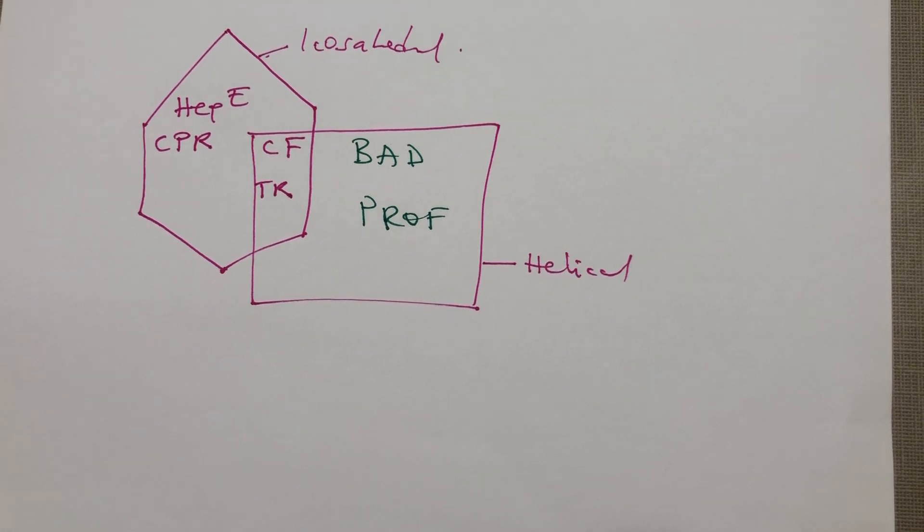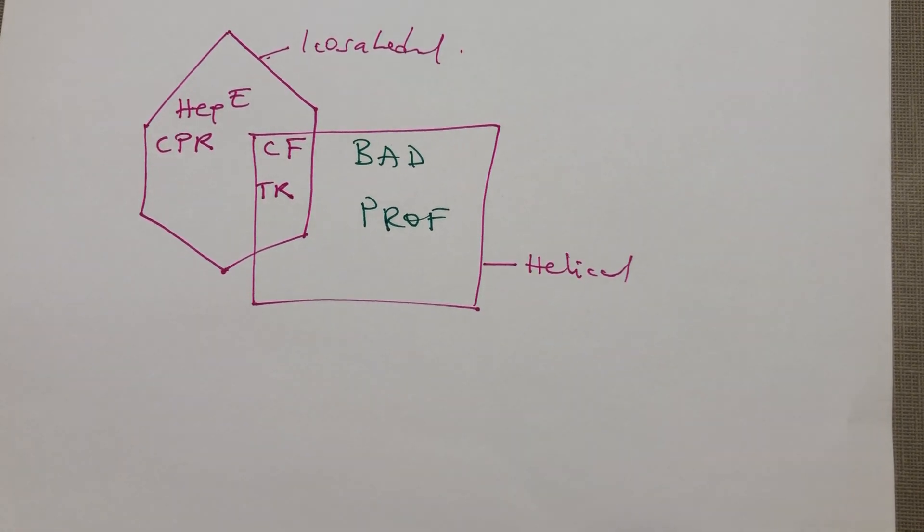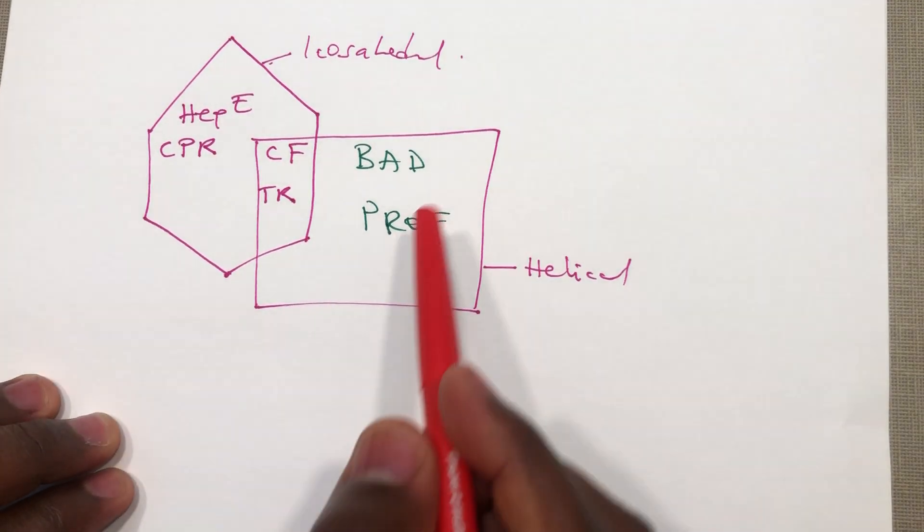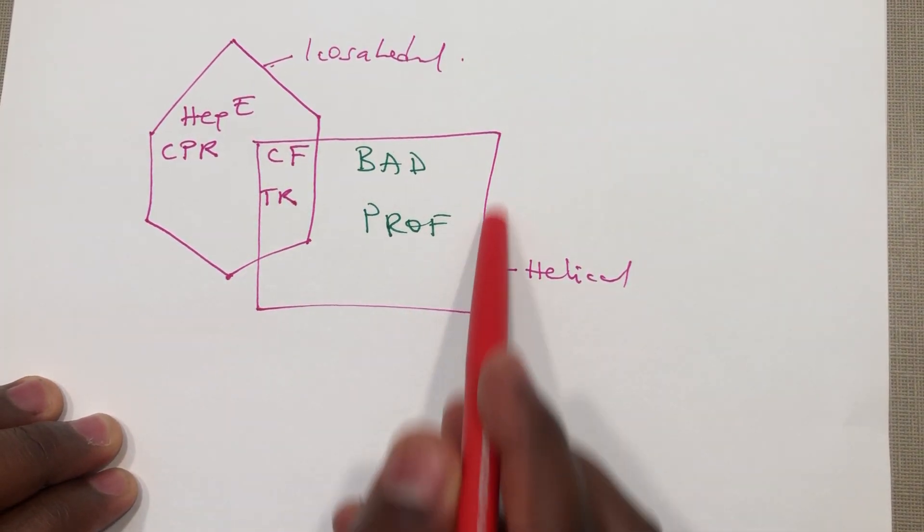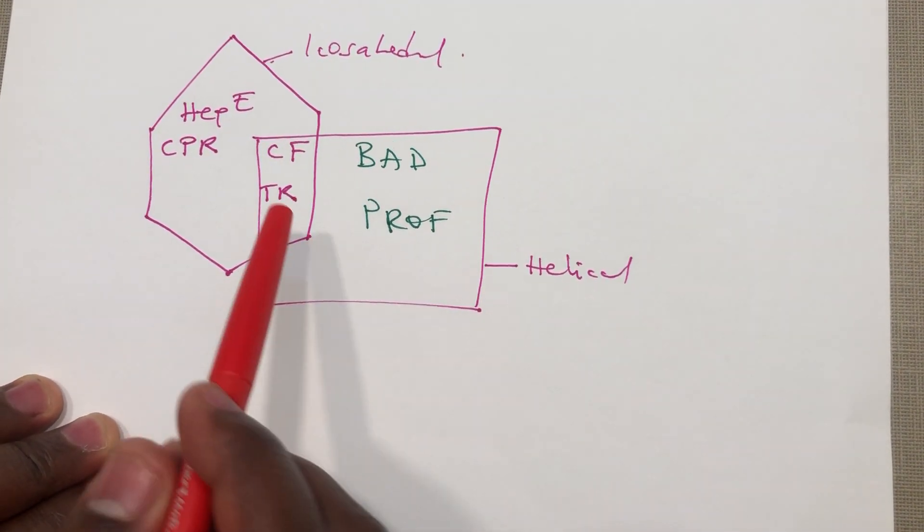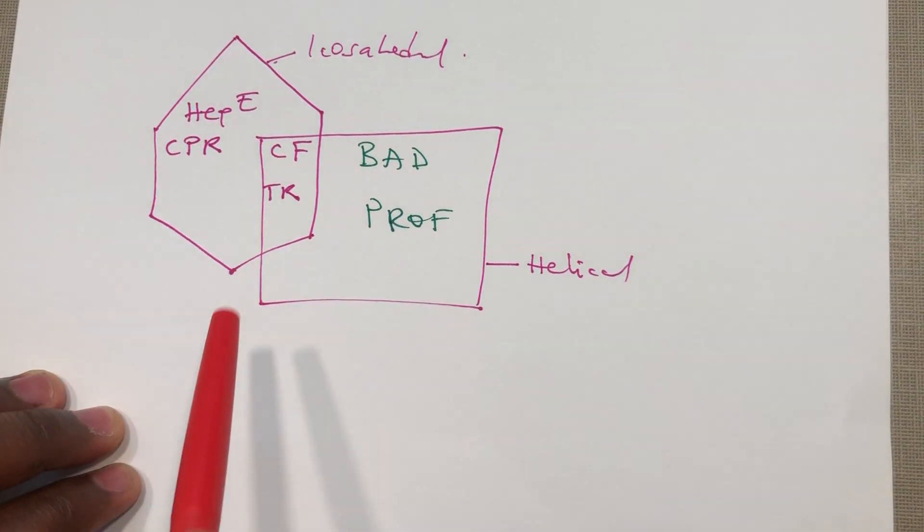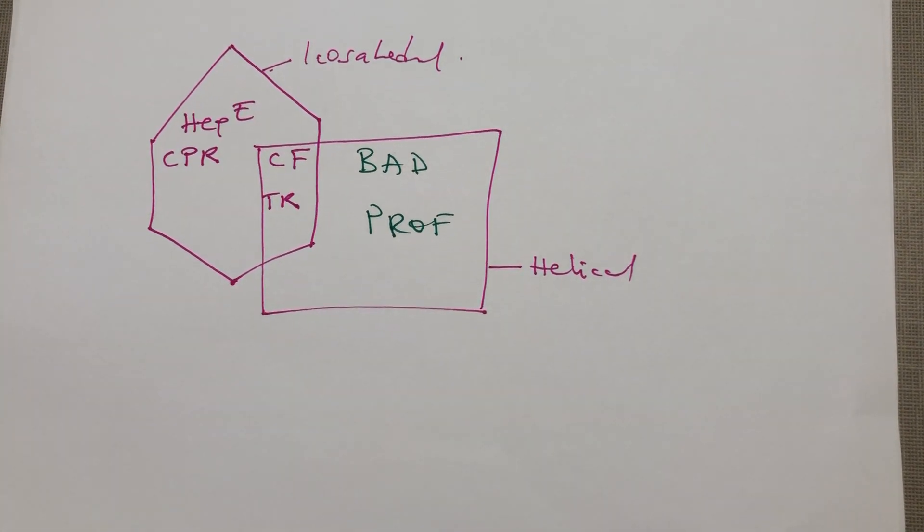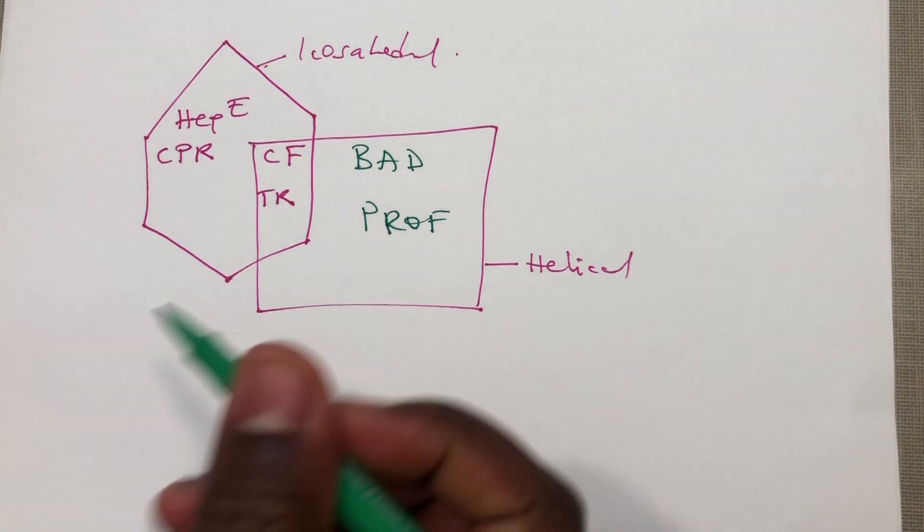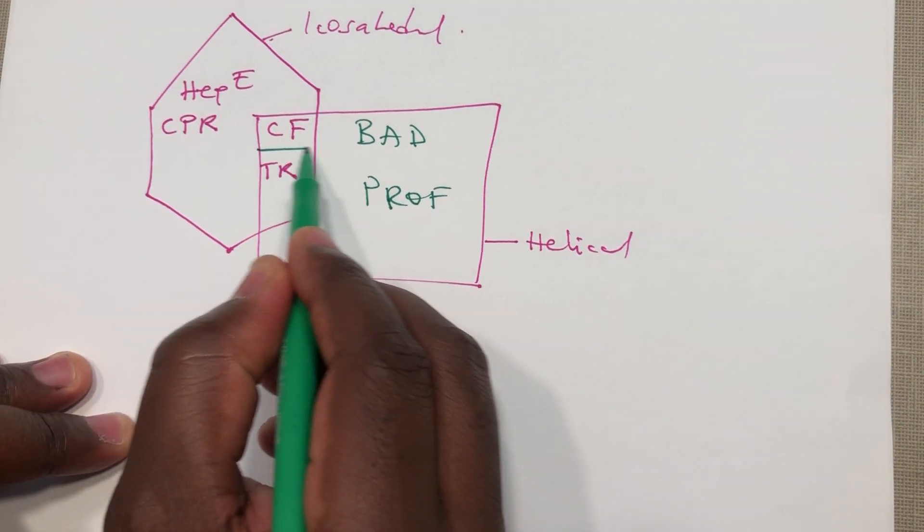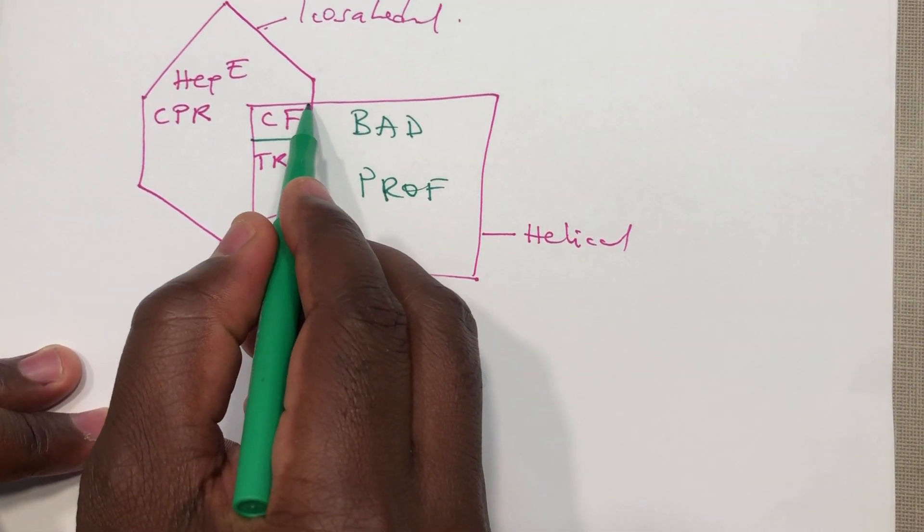We are going to look at them one after the other. The summary of the box is that if you see anything in the box it is helical and if you see anything in this shape it's icosahedral.